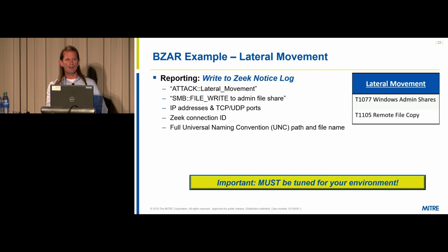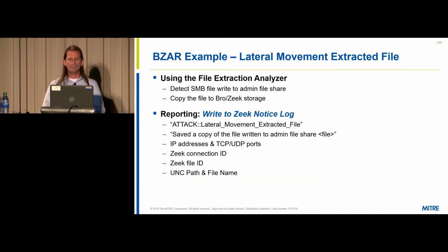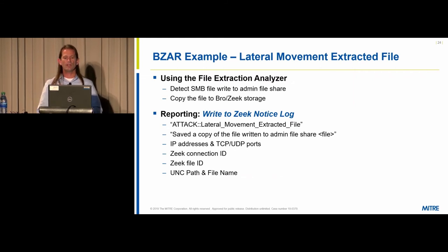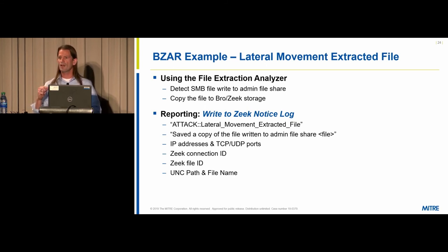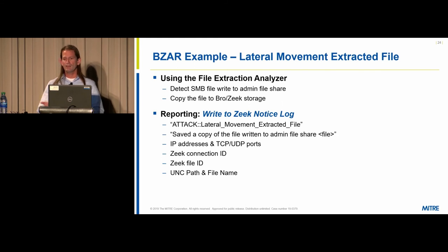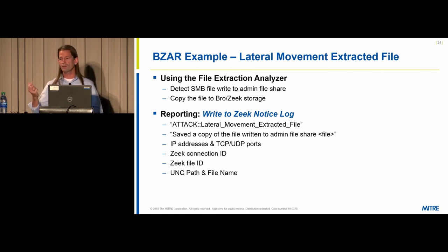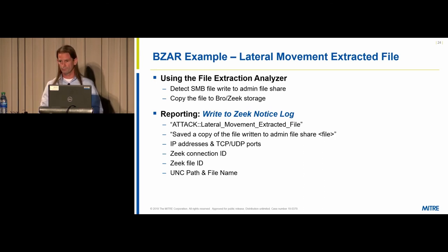Remember the file extraction analyzer. By default BZAR has file extraction enabled — there's a global variable you can redefine to toggle it. If set to true, it will extract the file from SMB traffic and generate another entry in the notice log: 'Lateral Movement Extracted File.' It provides a copy of the file saved locally on the Zeek device, along with the IP addresses, ports, Zeek connection ID, Zeek file ID, and the UNC path and file name of the file as it was written to the victim box.